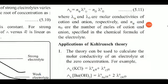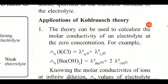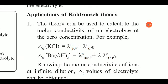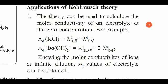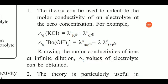Now we look at the applications of Kohlrausch's law. One application is calculating the molar conductivity of an electrolyte at zero concentration. For example, for KCl: lambda zero of KCl equals lambda zero of K⁺ plus lambda zero of Cl⁻. The capital lambda is used for the electrolyte and small lambda for the individual ions.